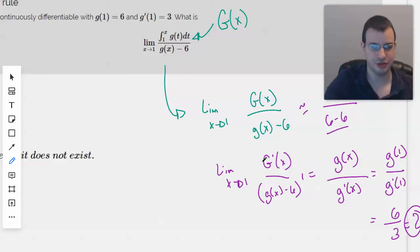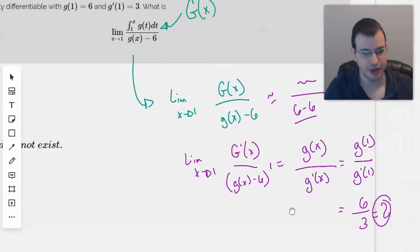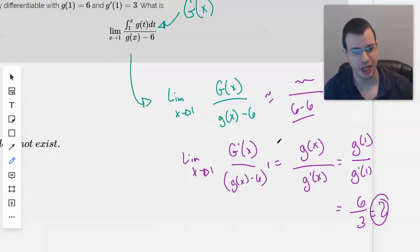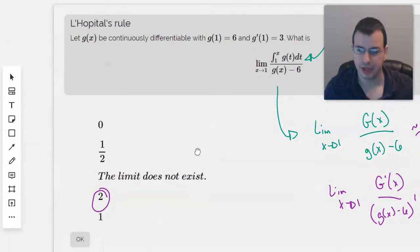L'Hopital's rule, take a derivative of the top, derivative of the bottom, and that equals the same. I should have put in still a limit as x approaches 1 for all of these, and then eventually the answer would be 2. And that's how this problem is solved.